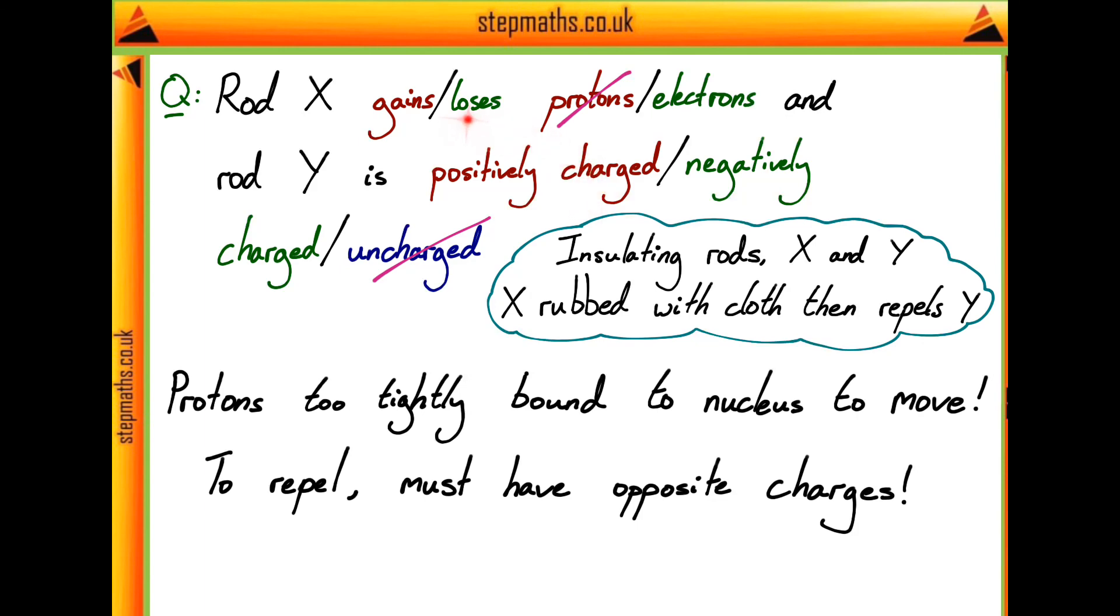However, if rod X was to lose electrons, then it would be becoming more positive. So if Y is also positively charged, then the two rods would repel each other. So that is going to be the correct one. Rod X loses electrons, and rod Y is positively charged. So this corresponds to answer F given in our question.